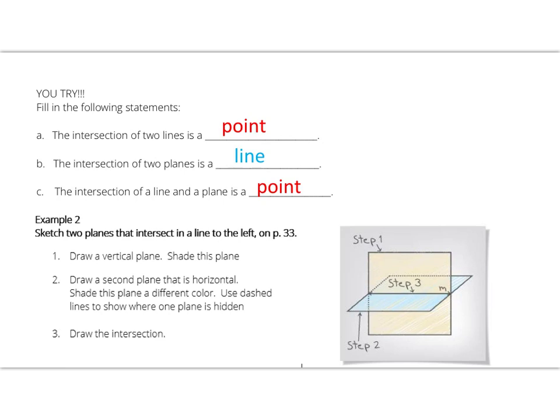Take a moment here to pause and practice sketching two planes that intersect at a line. This page reference is the page in the textbook, not your journal. Step one is to draw a vertical plane, this yellow portion. Draw what looks like a rectangle or square on your paper.